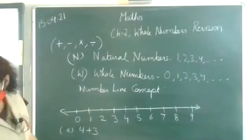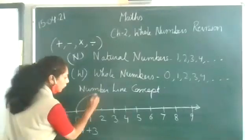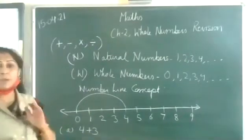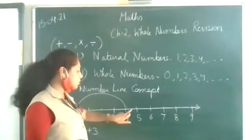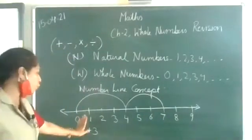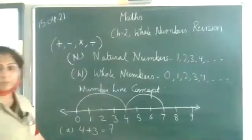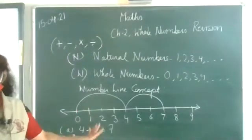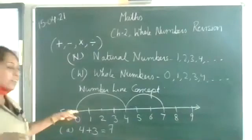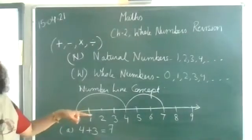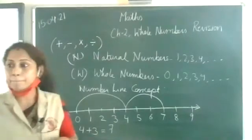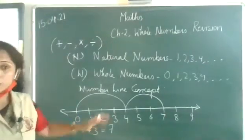So how are you going to perform? You will start with zero and you will reach till four. Then, since it's an addition of plus three, you have to make hops of three numbers after four — one, two, three — and you reach seven. Four plus three equals seven. You can do mental addition also or with marks, but this is the other way — the number line. Please keep this thing in mind; it's very important. How many of you have understood this? Please give me a thumbs up.